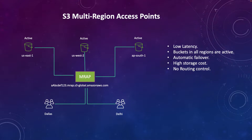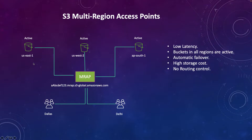S3 Multi-Region Access Points provide a global endpoint for routing Amazon S3 traffic between AWS regions. You can set up your S3 buckets in different regions — for example, US East 1, West 2, and AP South 1 — and define replication between these three buckets. If any data is added in one bucket it gets replicated to the other buckets as well. When you define the Multi-Region Access Point, you get a global endpoint which you can use in your application. Behind the scenes, Amazon finds out which region has the lowest latency and sends all your requests to that particular region.